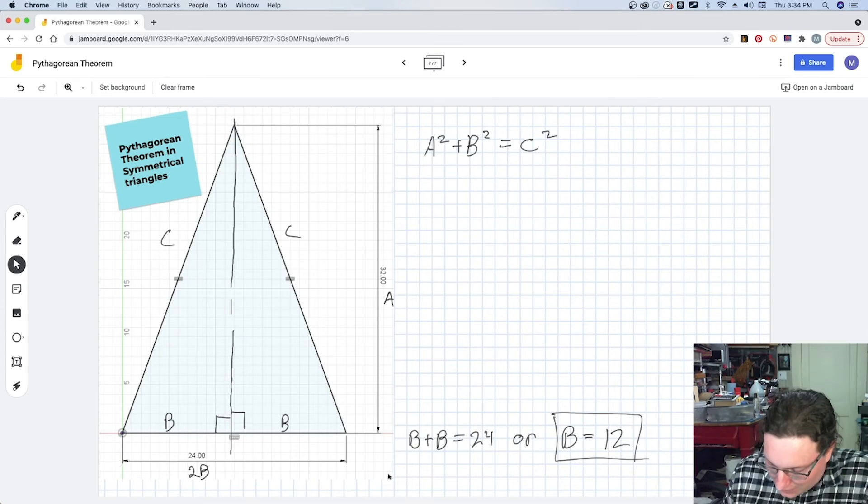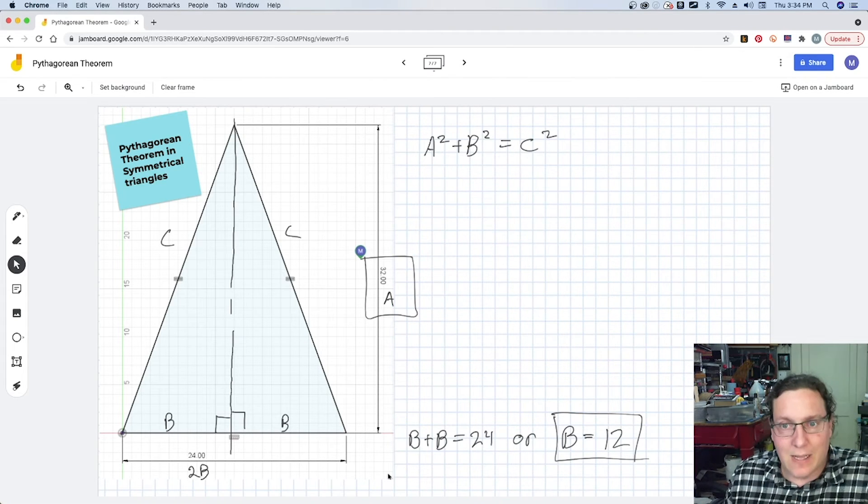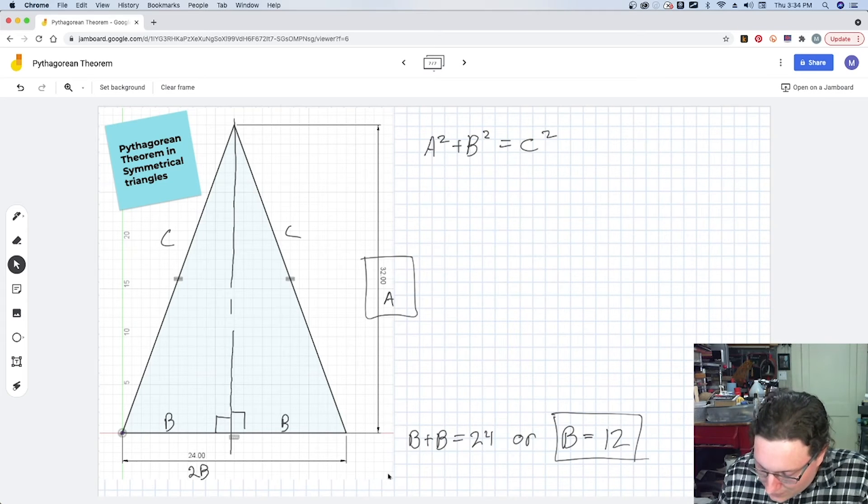We know that the other component, A equals that 32. So we can say that 32² + 12² = C².